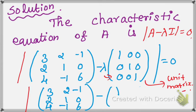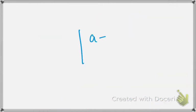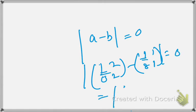So, applying matrix subtraction A - λI: first term no changes [3, 2, -1; 2, 1, 0; 4, -1, 6]. Subtract: first term minus first term. For matrix subtraction A - B, you subtract corresponding elements. Result: first row gives (3-λ), 2, -1.